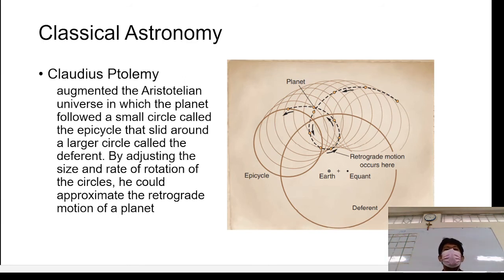So here, Claudius Ptolemy augmented what Plato and Aristotle made up of the universe, their explanation. So for him, to explain that retrograde motion of the planets with respect to the geocentric model, since the Earth is the center of the universe, for him, there's a circle that surrounds the Earth, which we call as the deferent. And the planets would follow the path of the deferent. But instead of just following straight path, with respect to the ways of the deferent, they move in an epicycle movement or motion.